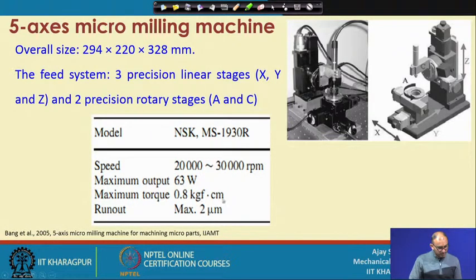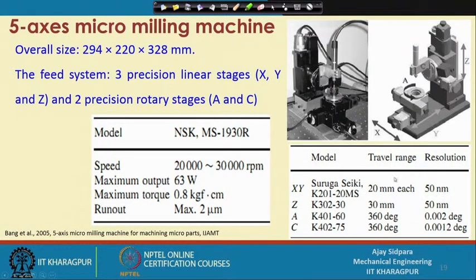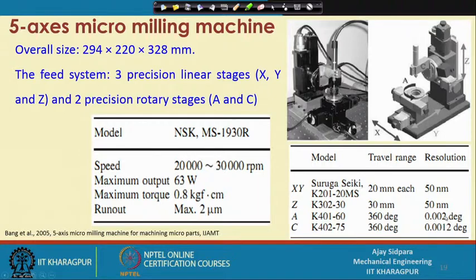The overall size is 294 by 220 millimeter width and length, with height of about one foot. The feed system has three precision linear motions for x, y, z and two precision rotary stages for A and C axes. The spindle rotates at 20,000 to 30,000 rpm, power is 63W, torque is 0.8 kg·cm, and runout is 2 micron. X and Y axes have 20 mm travel range with 50 nanometer resolution; Z axis accommodates 30 mm height components with the same resolution. The C-axis has angular precision of 0.0012 degree and A-axis 0.02 degree.